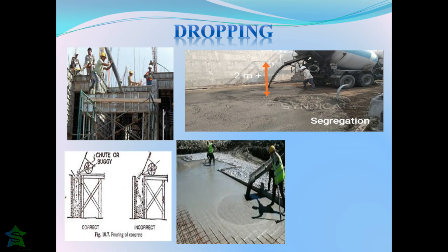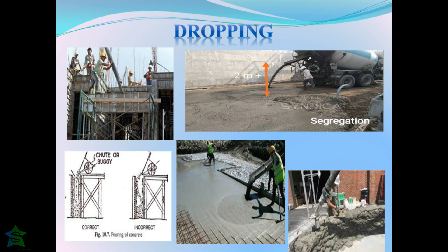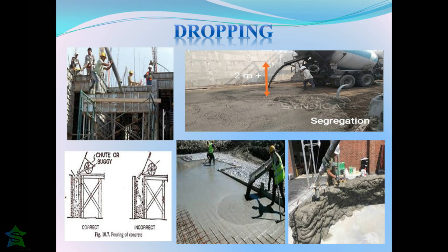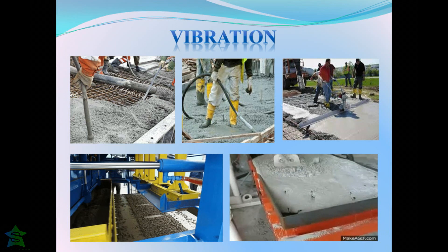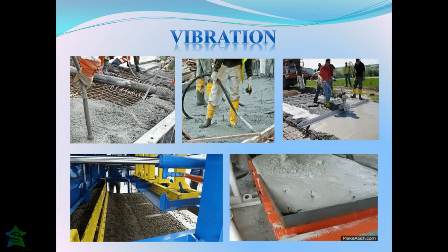Dropping of concrete from heights, as in the case of placing concrete in columns, will result in segregation. Concrete must be dropped from a minimum one meter height. If a height greater than one meter is used, then the fine aggregates and cement paste will separate from the coarse aggregates and fall down separately.